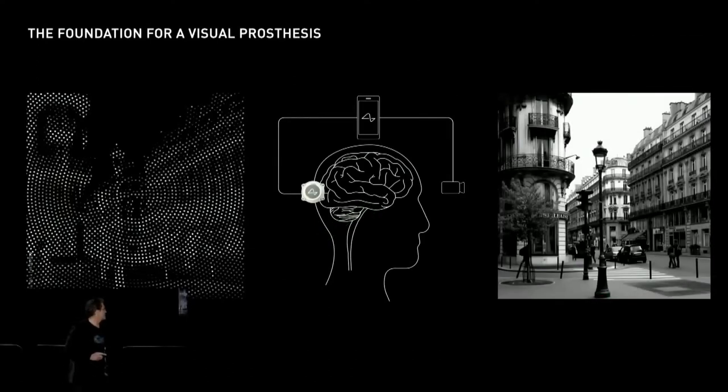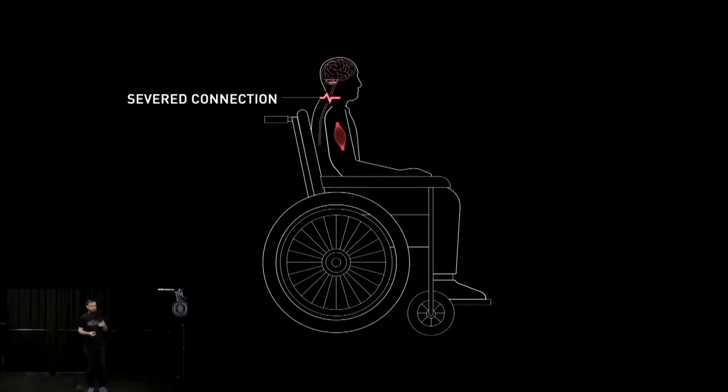This is a schematic of what a visual prosthesis using our N1 device might look like. A camera, the output from a camera would be processed by an iPhone, for example, which would then stream the data to the device, and the image would be converted into a pattern of stimulation of the electrodes into visual cortex. You've already heard about how we can use the N1 link as a communication prosthesis to help someone with spinal cord injury control a computer or a phone. But it can also be used to reanimate the body.